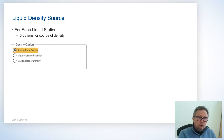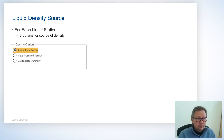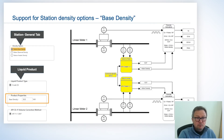With our crude oil applications we also need to have a source for our density. This could be measured or entered. We have three basic options: station base density, meter observed density, and station header density.